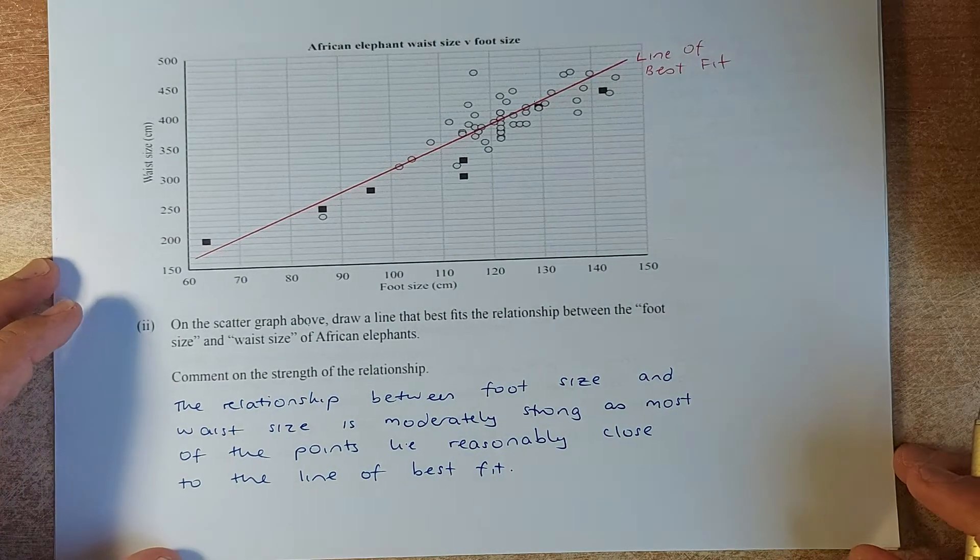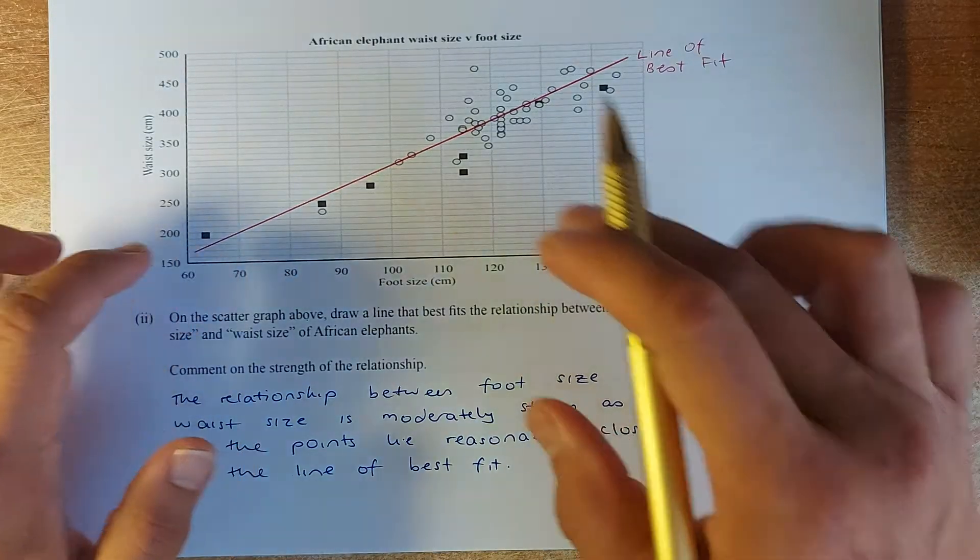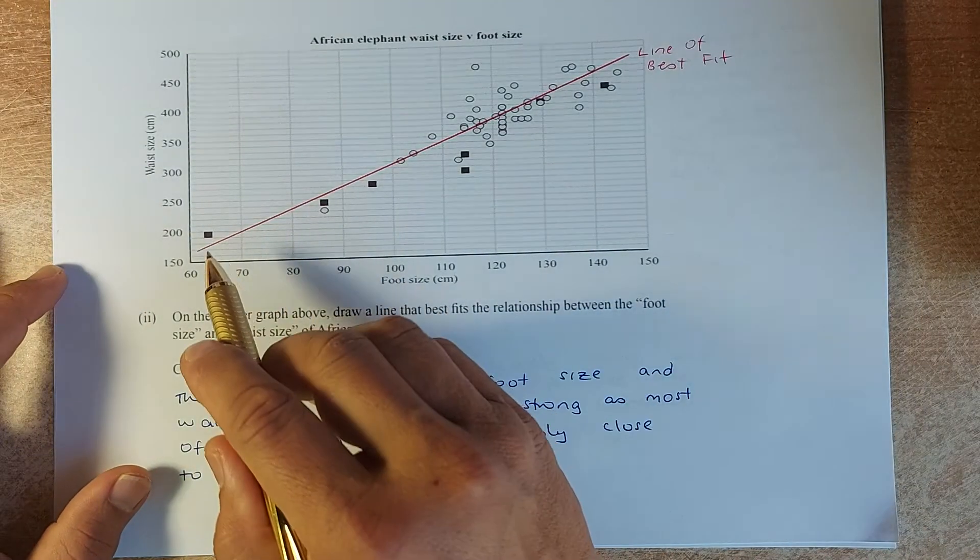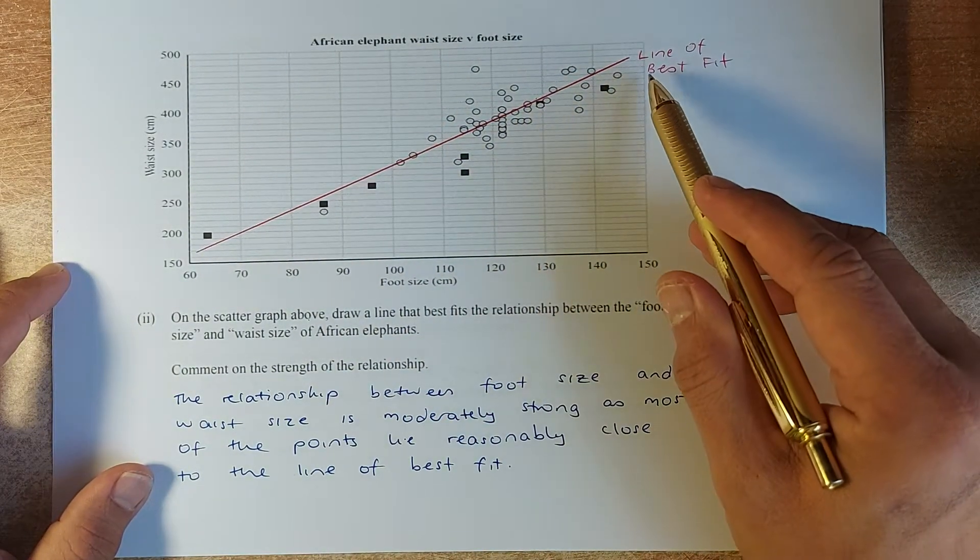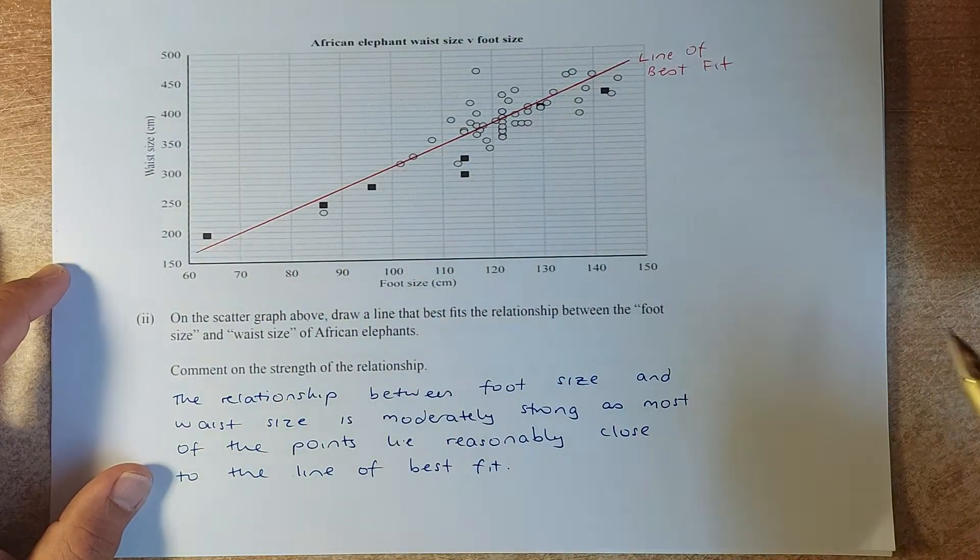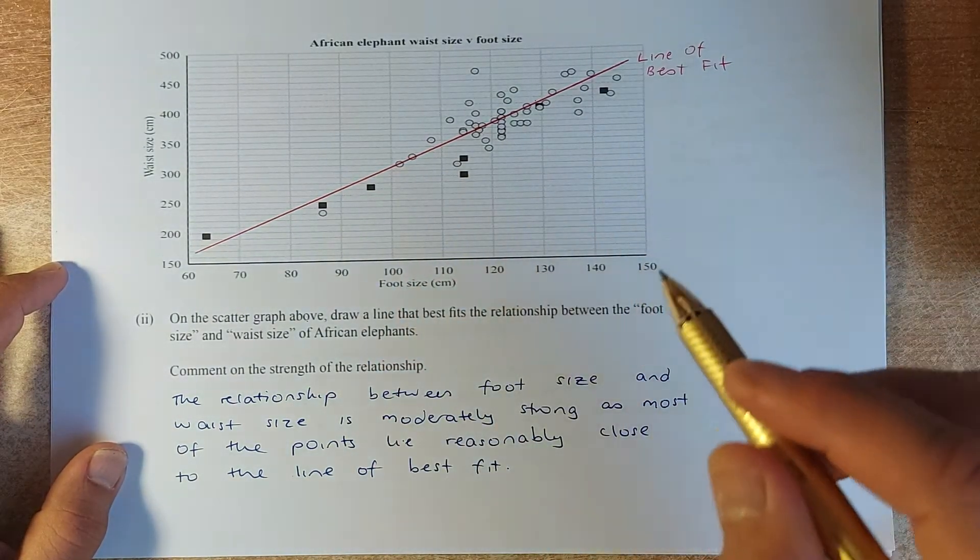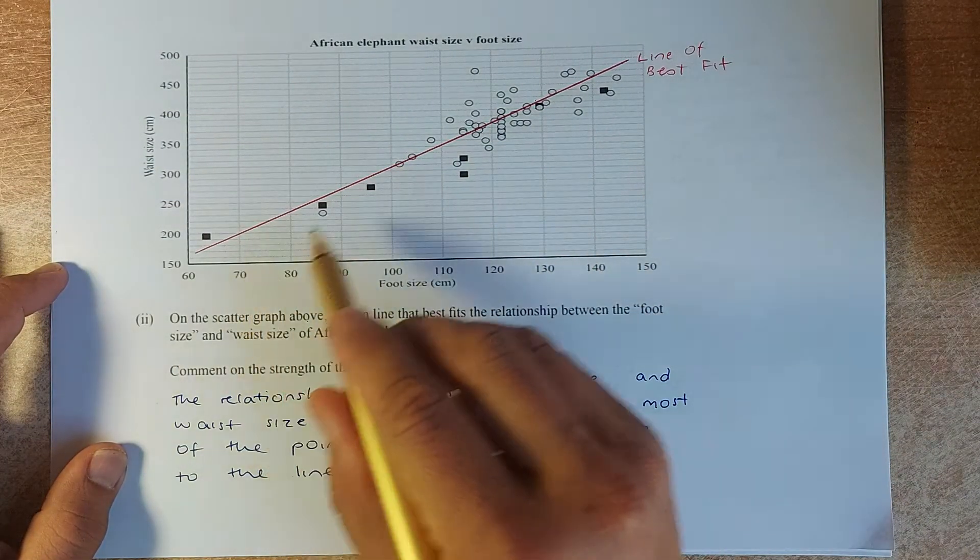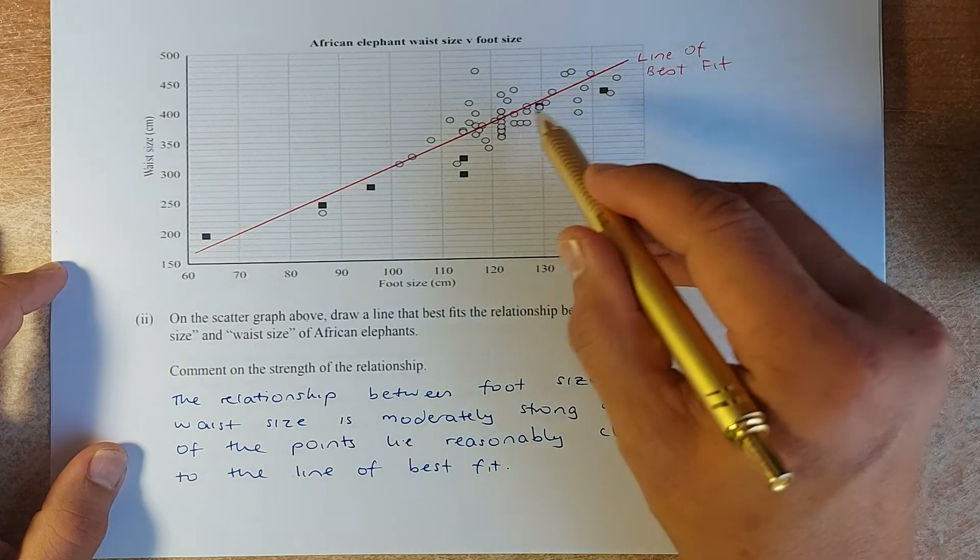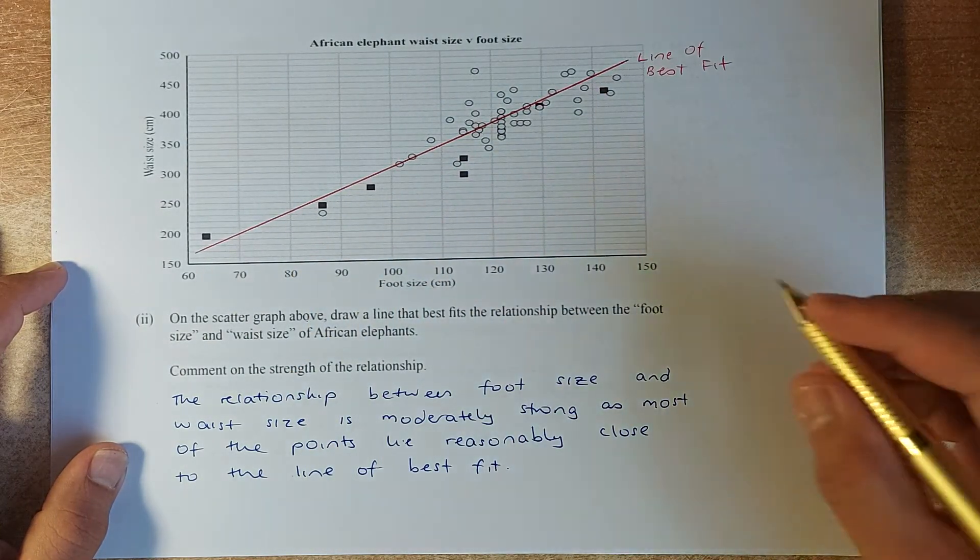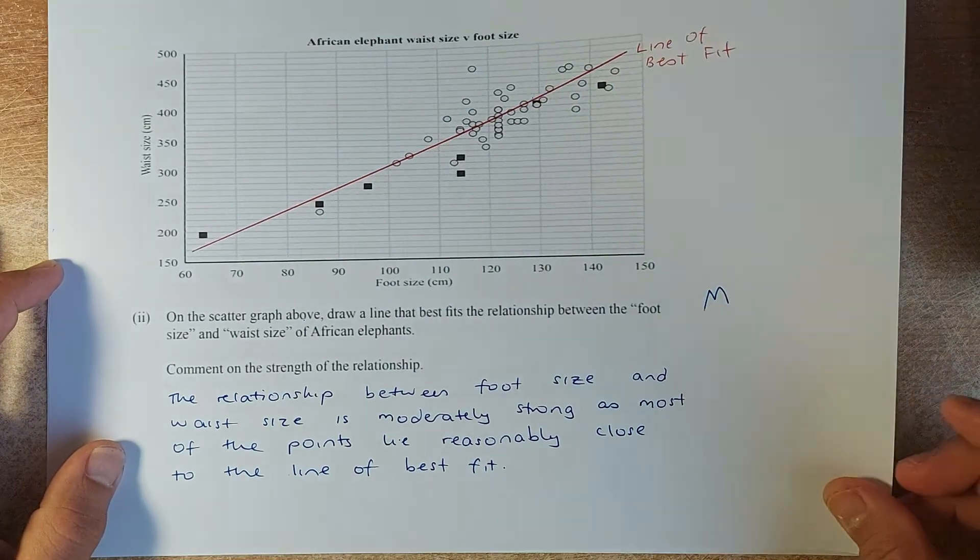Now we shall do the second question. On the scatter graph, draw the line of best fit between the foot size and the waist size. We have drawn a line which is halfway between the dots and the square. So we name it the line of best fit. So that line will give you an achieve. And they ask you to comment on the relationship between the foot size and the waist size. As you can see, the relationship is pretty moderately strong. Why? Because most of the points lies close to the line of best fit. So if you can draw the line and answer that question, you will get a merit.